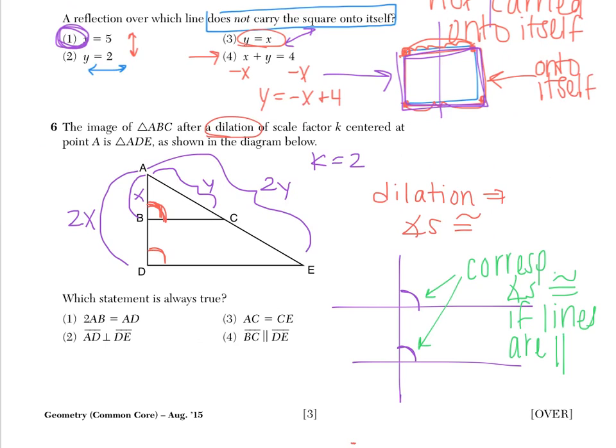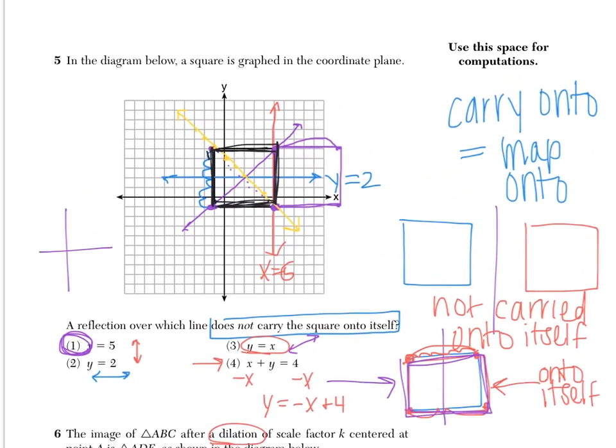Which then means that we can conclude that this line is parallel to this line. And so bringing that back to our picture, that must mean that BC is parallel to DE. Choice 4. So again, solutions for this page. Number 5 is 1. And 6 is 4.